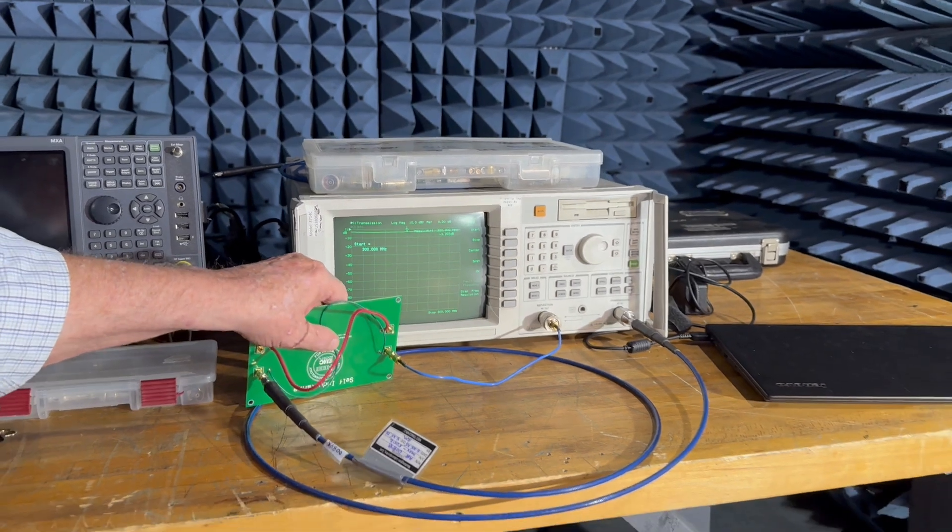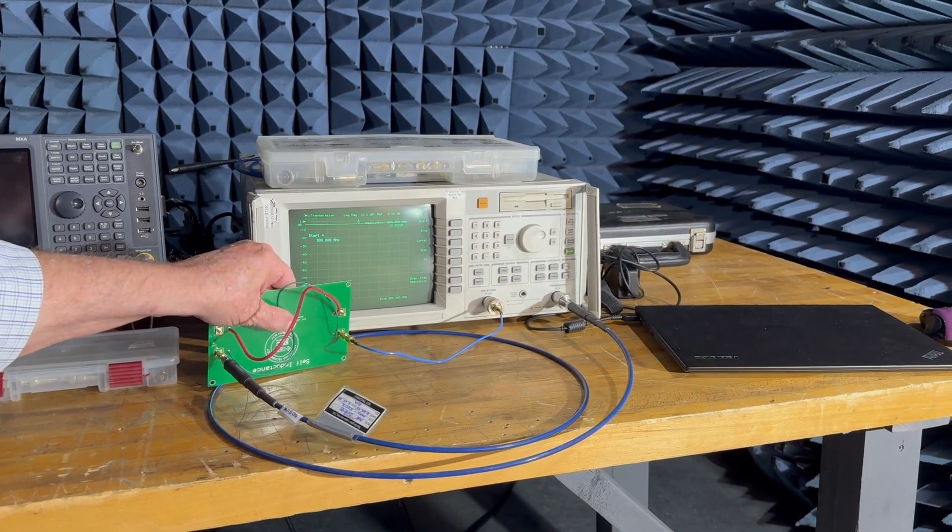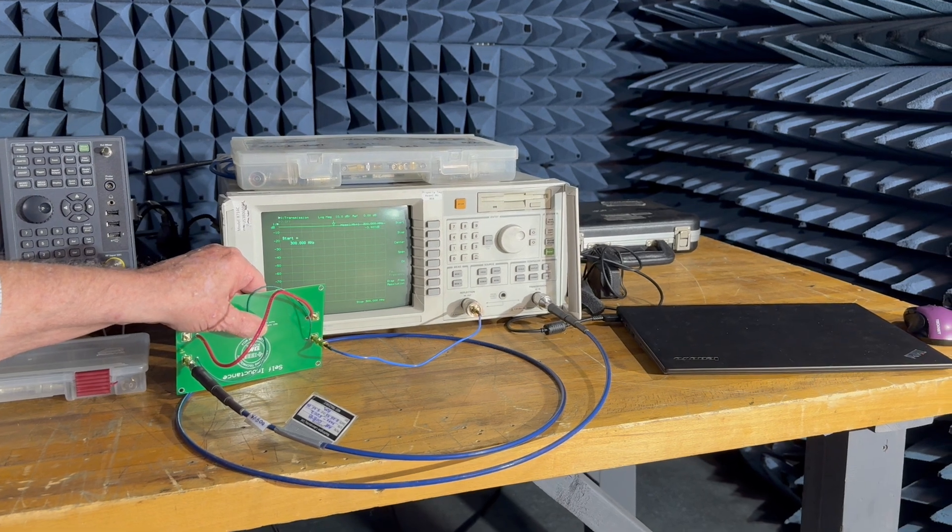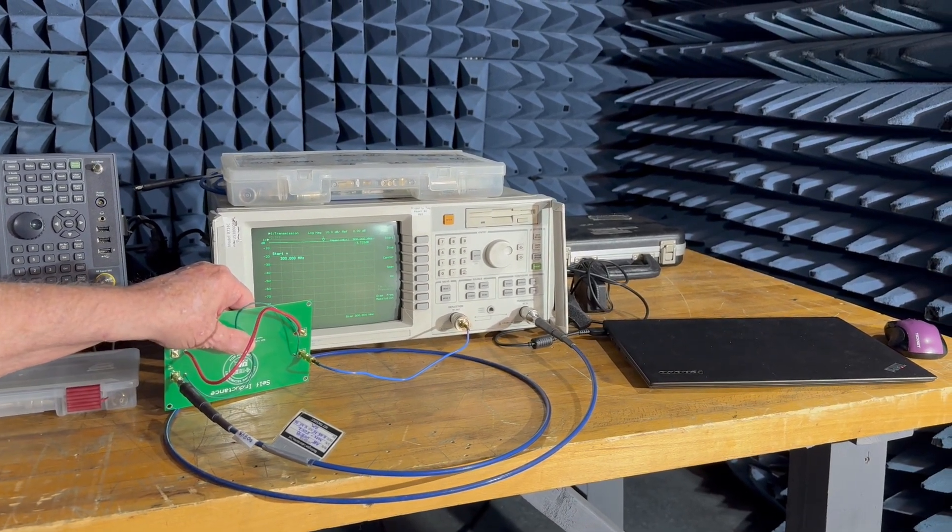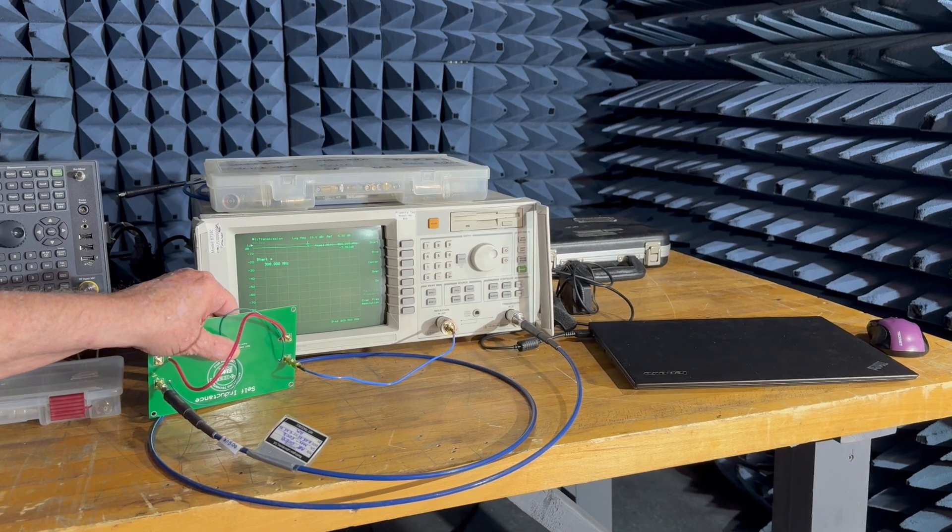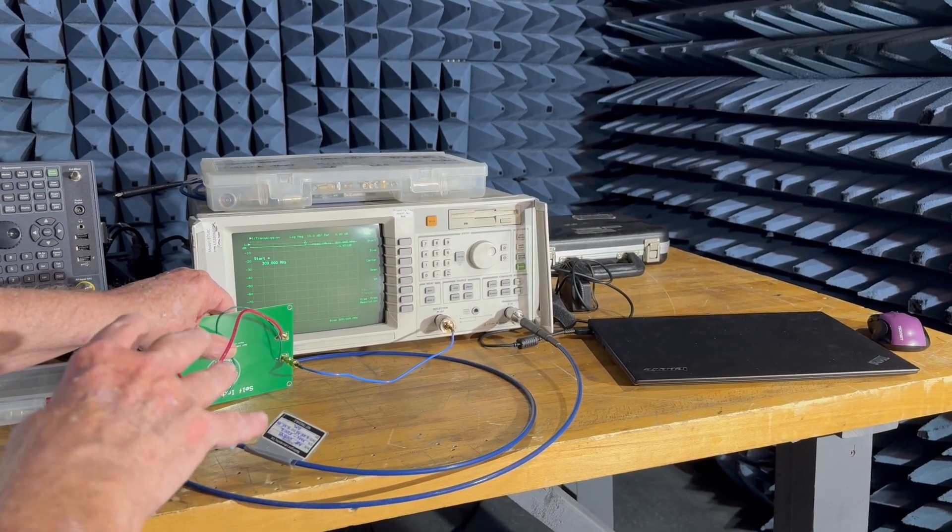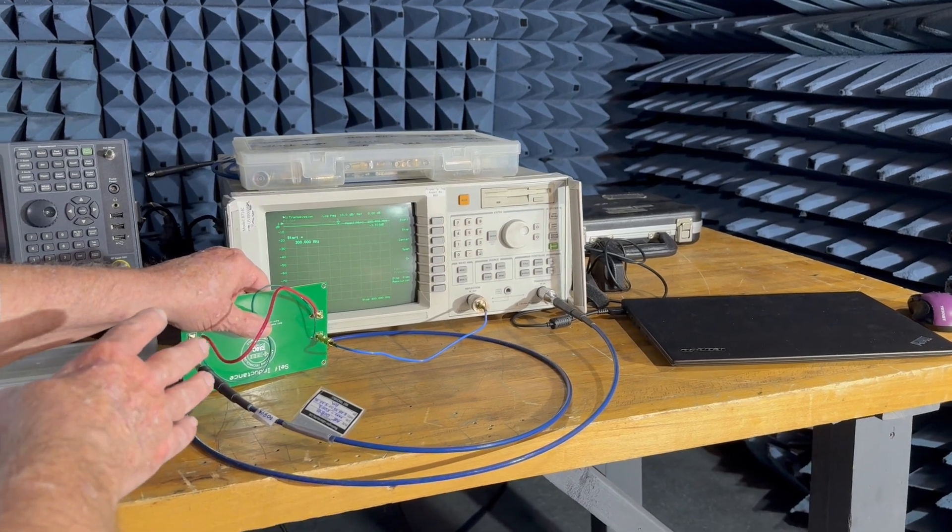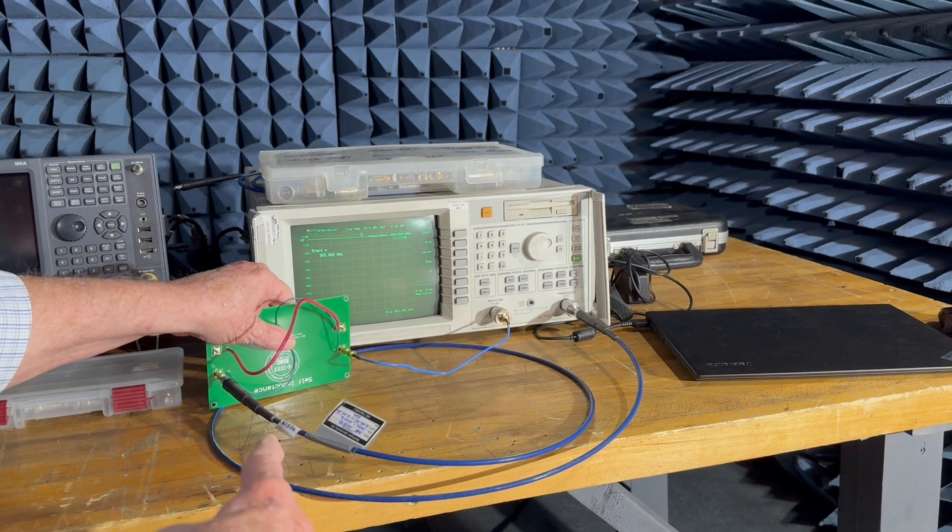Now if I just take this green wire, which is the one we're looking at right now, and bring it back to its ground plane—because on the other side of the circuit board there's a reference plane ground return—as I bring this wire down to the board, I'm making the loop area much smaller.